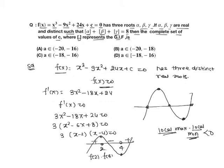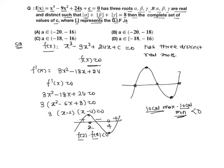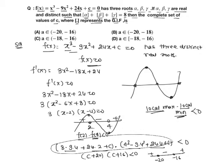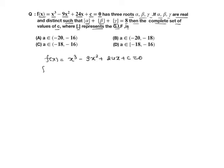We need f(2) · f(4) < 0. Computing f(2): 8 - 9(4) + 24(2) + c = c + 20. Computing f(4): 4³ - 9(4²) + 24(4) + c = c + 16. So (c + 20)(c + 16) < 0, giving us -20 < c < -16. Therefore c belongs to (-22, -16) for f(x) = 0 to have three distinct real roots.